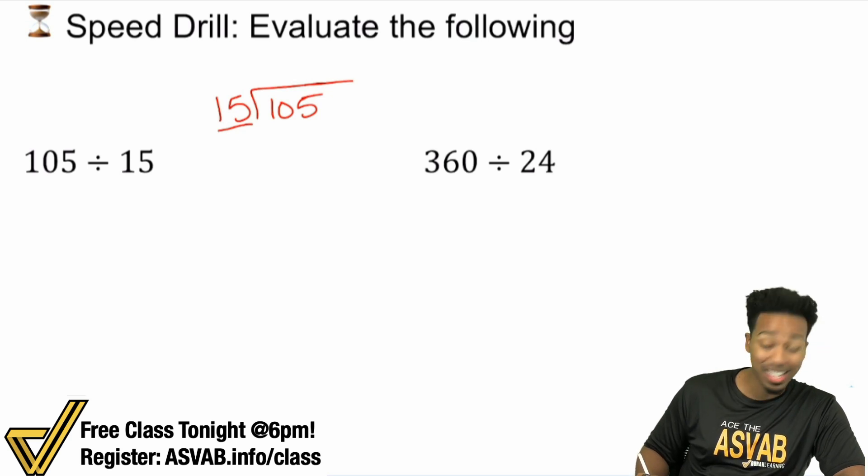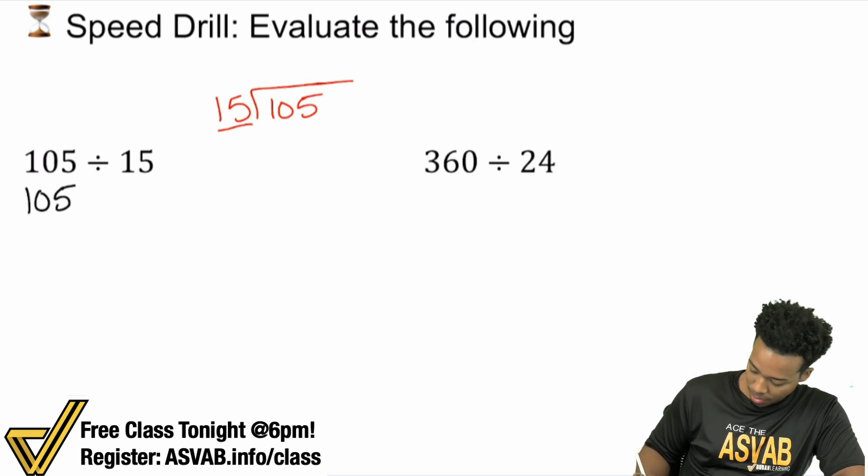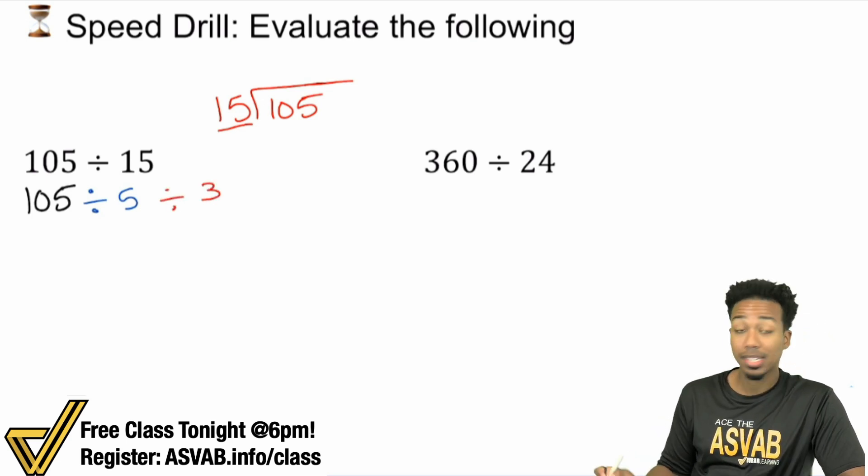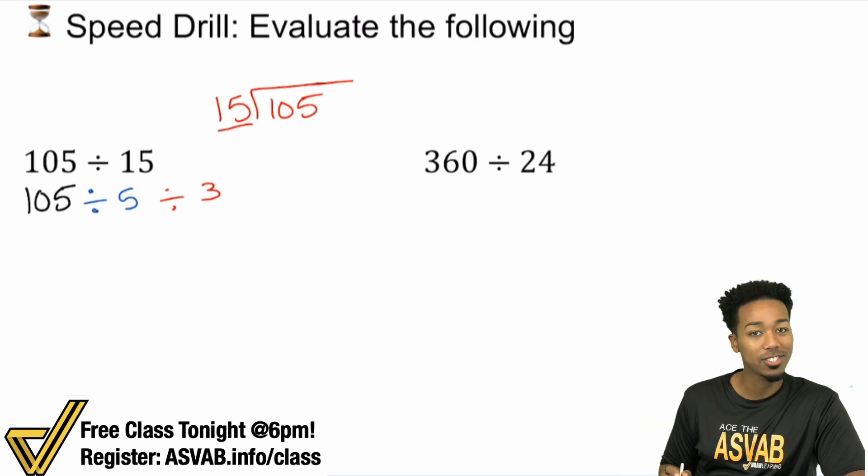Because if you divide by three and divide by five, that's the same as dividing by 15. Just like multiplying by three and multiplying by five is the same as multiplying by 15, dividing by three and dividing by five is the same as dividing by 15. You see what I'm saying here? You see what I'm getting at? This is a technique that you can absolutely use to your advantage here.